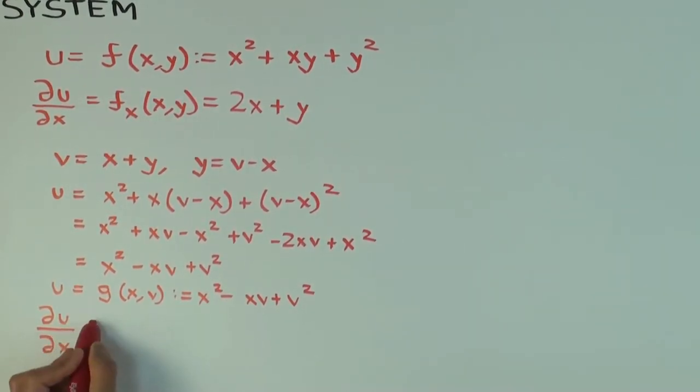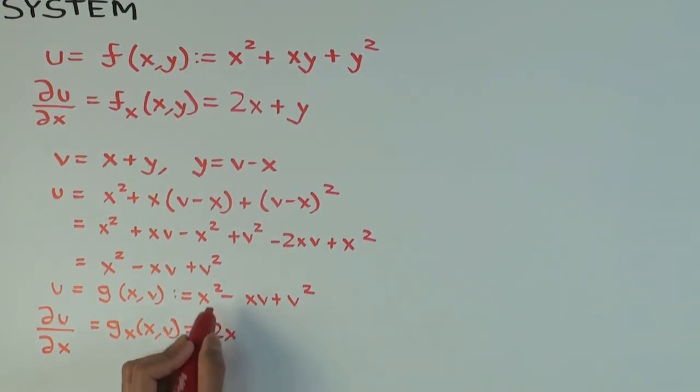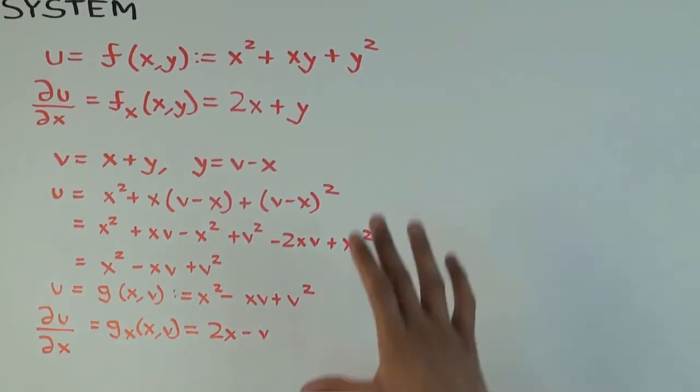Now, what is du/dx, which is just g sub x of x comma v? What is that? 2x minus v. That's the derivative of x squared minus v. So you're differentiating with respect to x, holding what constant? x plus y. That's v, holding v constant.